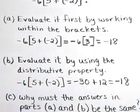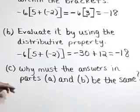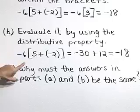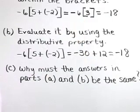Lastly, in part C, why must the answers in parts A and B be the same? Well, that's because for all real numbers, the distributive property will yield the same result as the order of operations does.